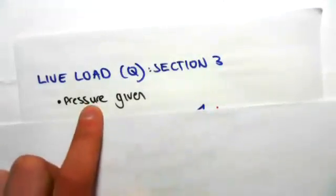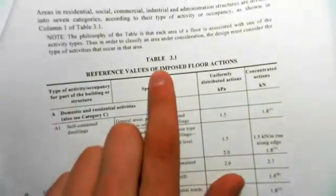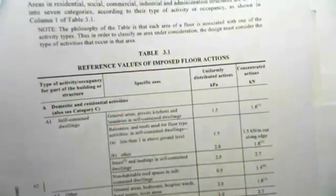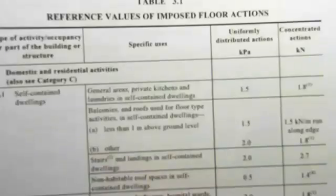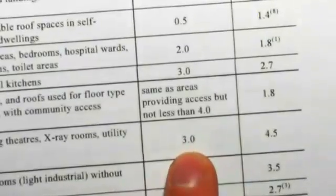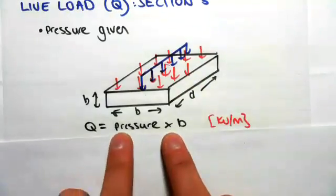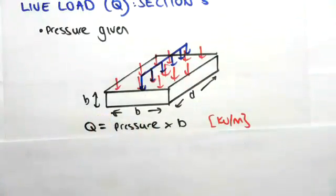The next one is the live load. It's the exact same process as the superimposed dead load — we're going to be given a pressure. This is in section three, just over the page, with things about imposed actions. What we're normally going to be referring to is a table: table 3.1, for example, has reference values of imposed floor actions. So we're given, say, office and work areas not covered elsewhere — operating theatres, X-ray rooms, utility rooms — a pressure of 3 kPa. The code tells us to apply a 3 kPa pressure in that situation. A pressure will be given to us based on a table, and it's the exact same procedure: pressure times the perpendicular length gives kilonewtons per metre.